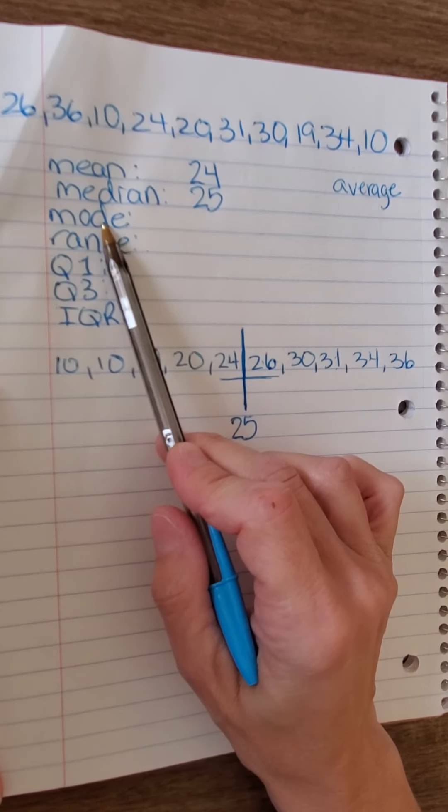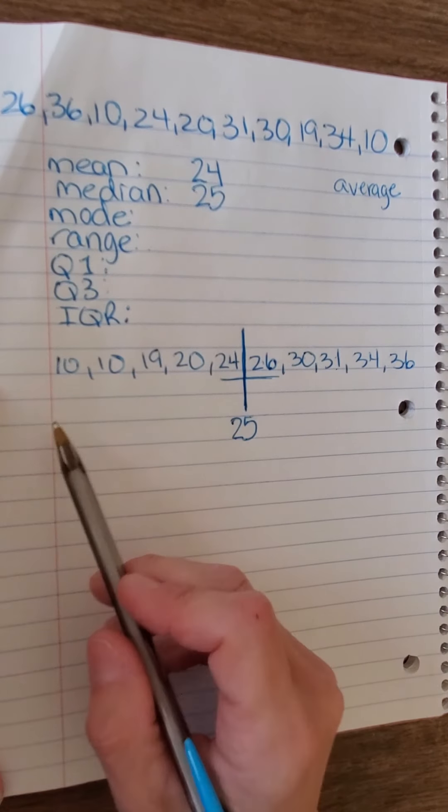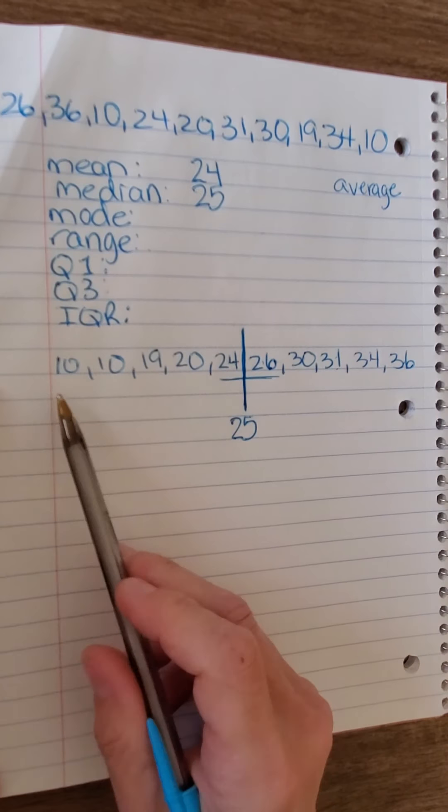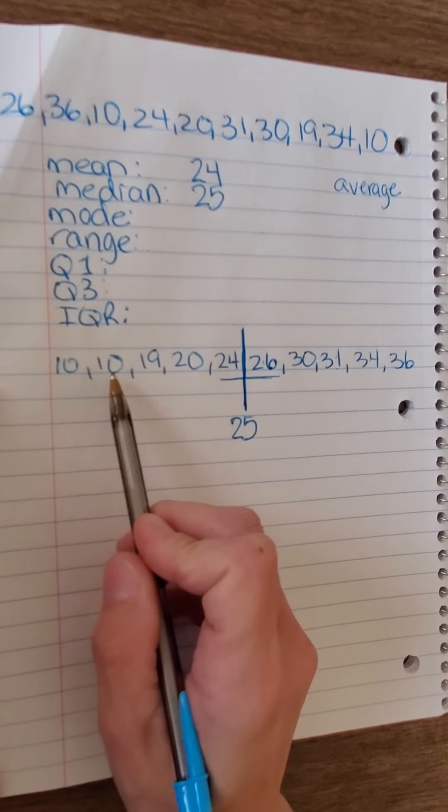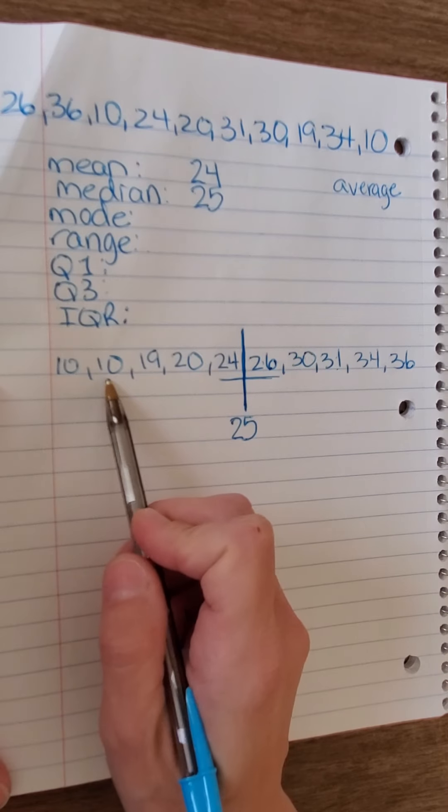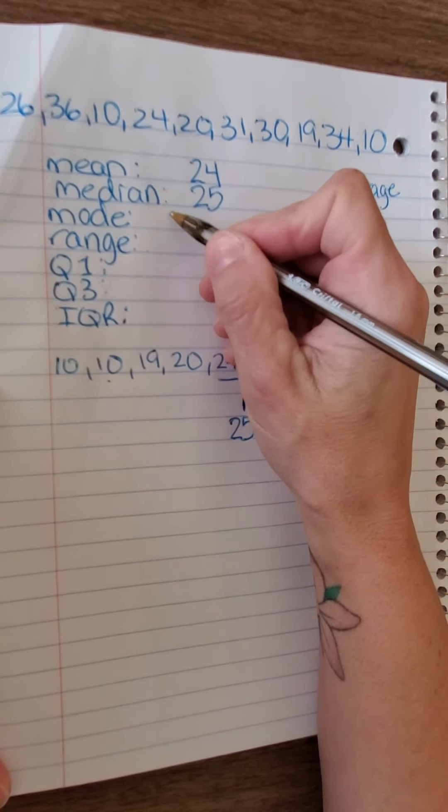Mode is the number that appears or repeats the most often. In this case, our number 10 appears twice, and that's the only number that repeats. So, our mode is the number 10.